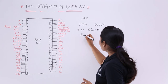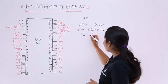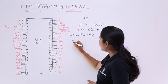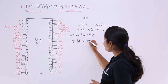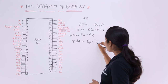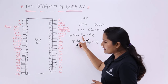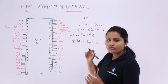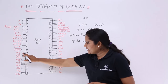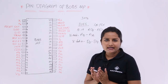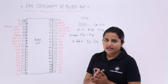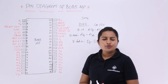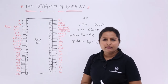The 8085 has a total of 16 address lines from A0 to A15, and 8 data lines from D0 to D7. The data lines D0 to D7 and address lines A0 to A7 are multiplexed and given as AD0 to AD7. These lines are called multiplexed address and data lines. Pin 20 is VSS, which means ground.